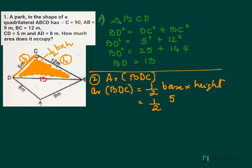So half base is 5, height is 12. And that would be now 6 into 5, 30 meter square. That is area of BDC.